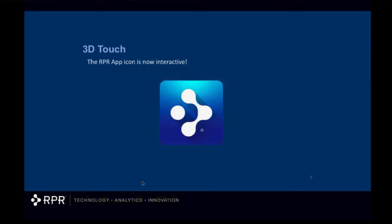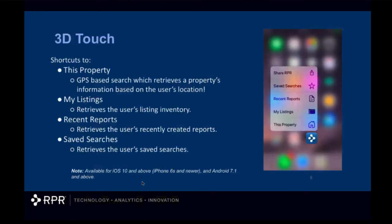From your home screen on your mobile device, the RPR app, as long as technology allows, is 3D Touch interactive. That means you can do a simple long press from your home screen on our app, and it will pop up a little window giving you a series of shortcuts. If you're farming and you want to go to a property, you can just tap that option — it will detect your GPS location and pull up the parcel report. Note that 3D Touch is only accessible on iOS 10 and above, which is the iPhone 6s and newer.